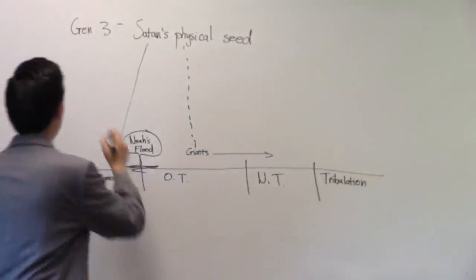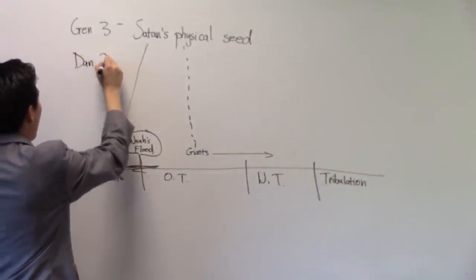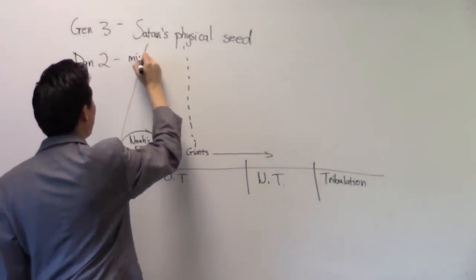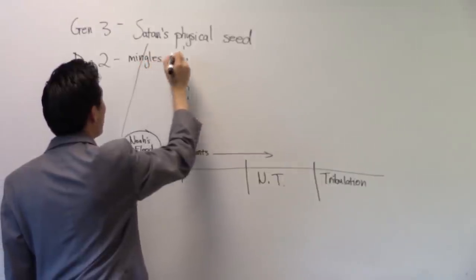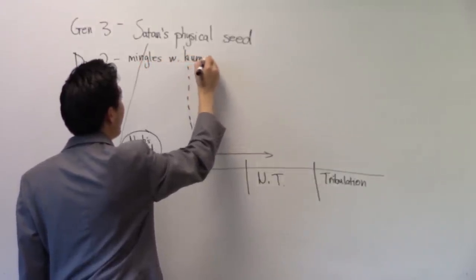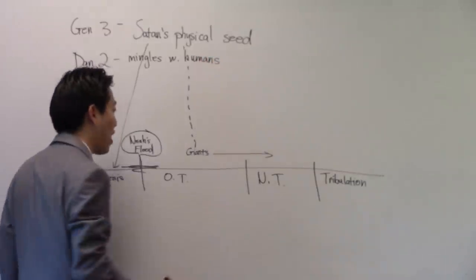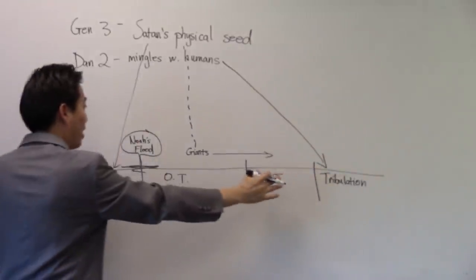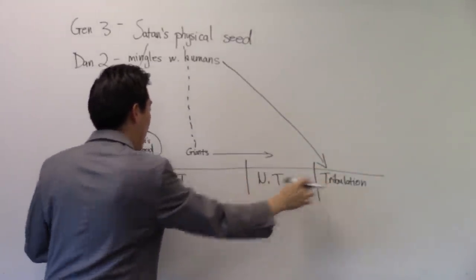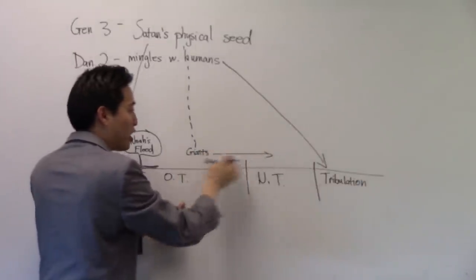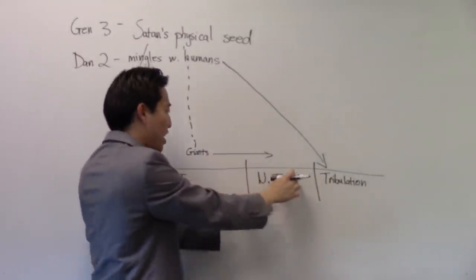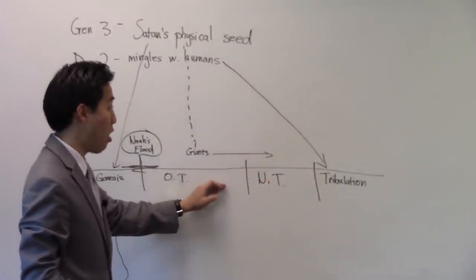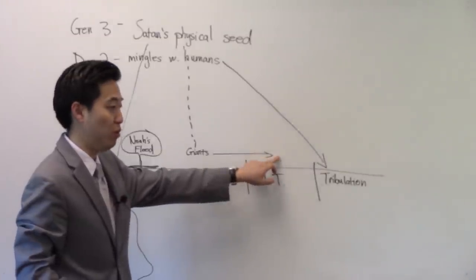We're going to look at Daniel 2 as well. We're going to find out in Daniel 2 that the physical seed, Satan's physical seed, it mingles with humans. It has to happen during the tribulation. If these two are definite things that has to happen, and we see a little bit of remnants in between here, it would be logical to say that today in the New Testament there can be little remnants. I'm not saying that there are, but it is very possible.